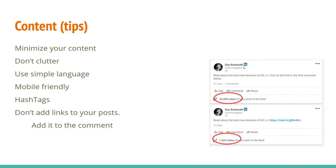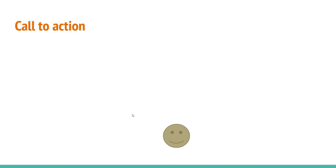Here's an example — a famous guy posted the same message twice. First version: 'Read about the best new features of iOS 11. Click the link in the first comment below.' That got around 25K views. Second version: the exact same message but with a link directly in the post — it only got 7,424 views. It's not that fewer people wanted to read it; it's that LinkedIn didn't show it to as many people. That proves that links reduce your post's reach.